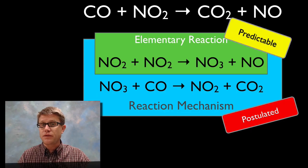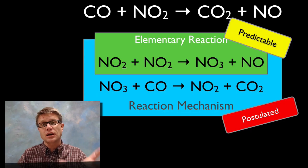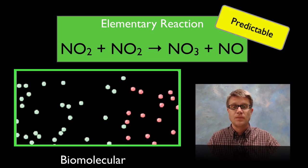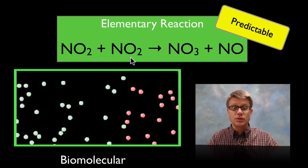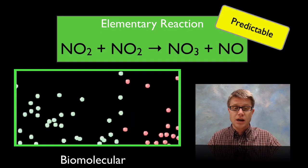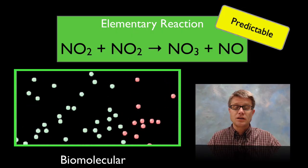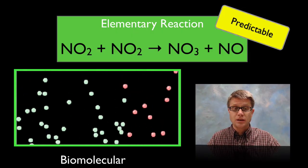And so if we know this is the first elementary step then we can take a look at that and we can figure out things like the rate law. If we know this is that first elementary step, we know that these two things are colliding together. We know that this is a bimolecular reaction. We could even model what's going on here.